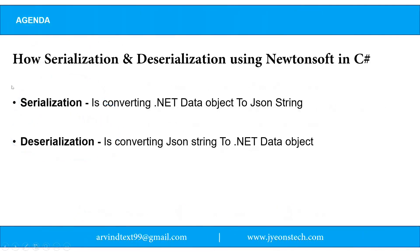Today's agenda is how to serialize and deserialize using Newtonsoft. We have already explained serialization and deserialization. Serialization is converting a .NET data object to a JSON string, and deserialization is converting a JSON string to a .NET data object. So let's see how to do this using Newtonsoft.